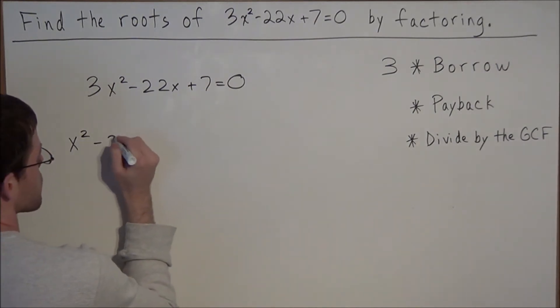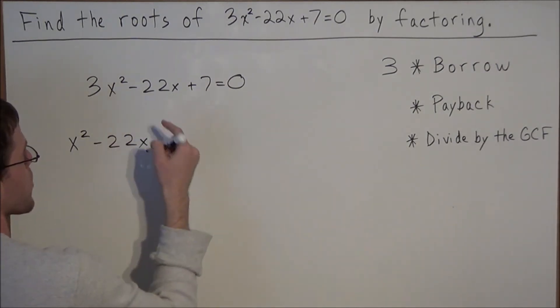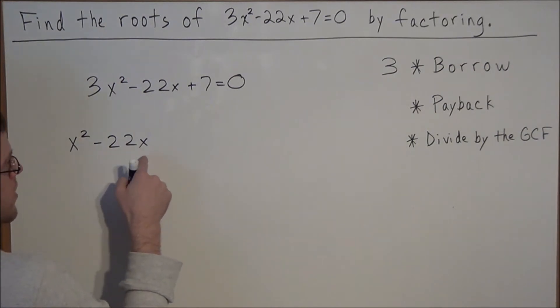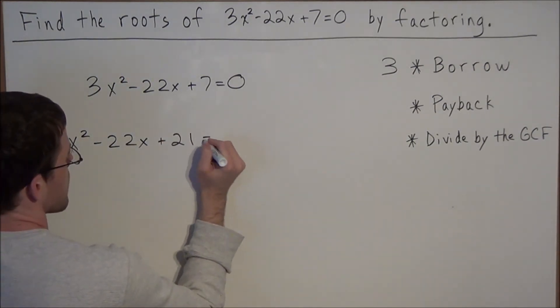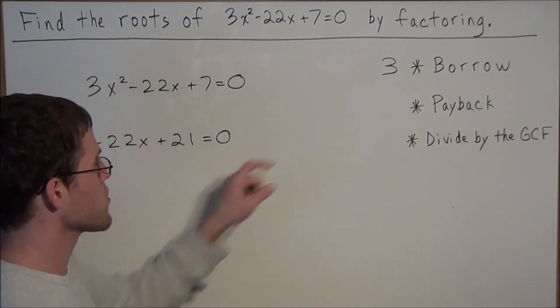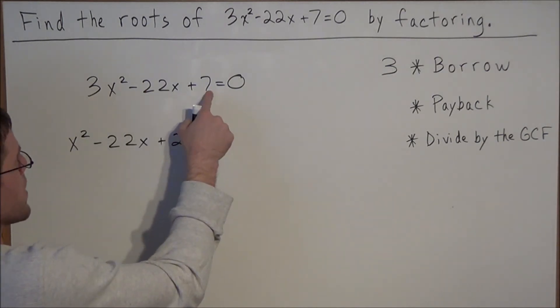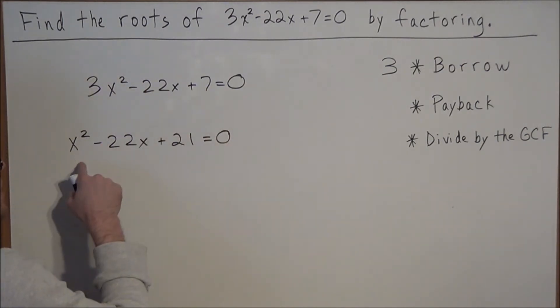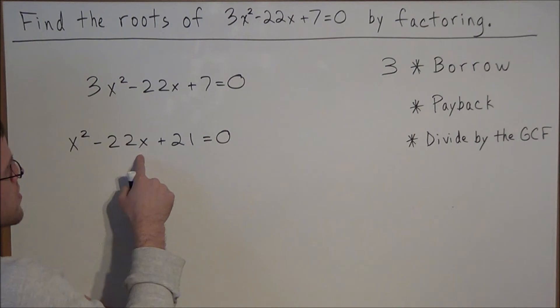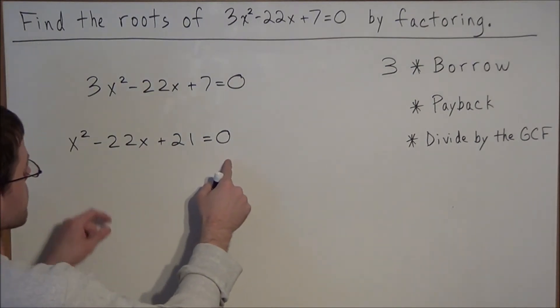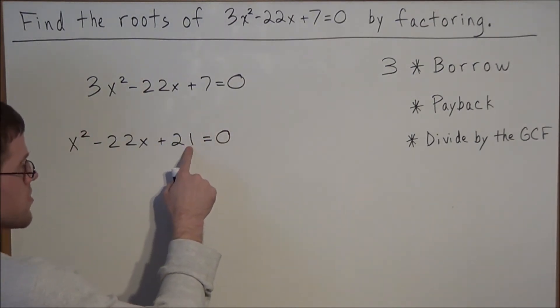This allows us to rewrite this quadratic equation as x² - 22x + 21 = 0. For the first step we borrow the 3 in front of the x squared and we multiply 3 times 7 to get this last term.